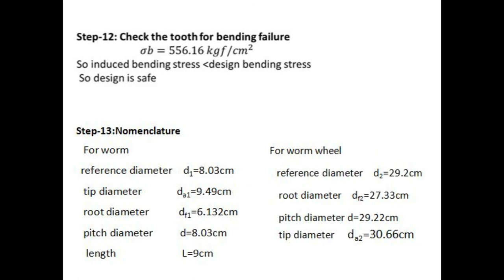Step 13: Nomenclature. For worm, reference diameter D1 equals 8.03 cm, tip diameter DA1 equals 9.49 cm, root diameter DF1 equals 6.132 cm, pitch diameter D equals 8.03 cm.